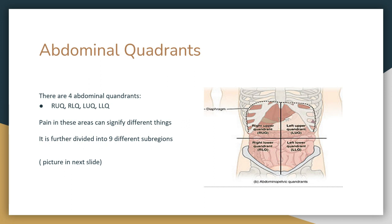Now, the abdominal quadrant. The abdomen can be divided into four different quadrants: right upper quadrant, left upper quadrant, right lower quadrant, and left lower quadrant. Pain in these areas can signify different things because different organs are located in each quadrant. For example, pain in the right upper quadrant could relate to a different organ than pain in the left lower quadrant. That's why it's important to know your region and which organ is located in each one.